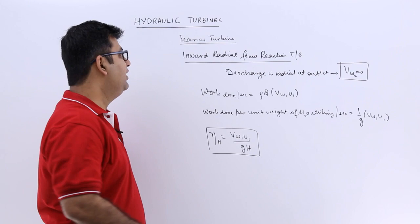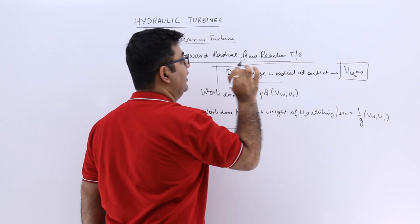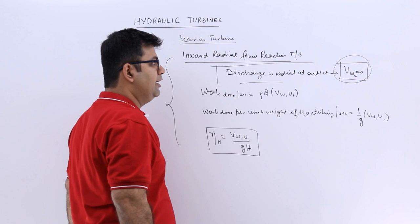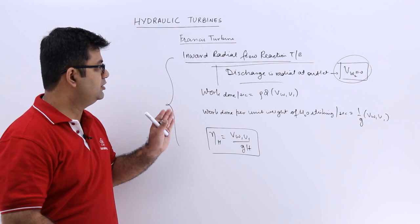So this is a very simple topic. Just remember that the discharge is radial at the outlet. This means in the velocity diagrams for a radial reaction turbine, Vw2 will become 0. So this is the only thing you need to remember in Francis turbine.